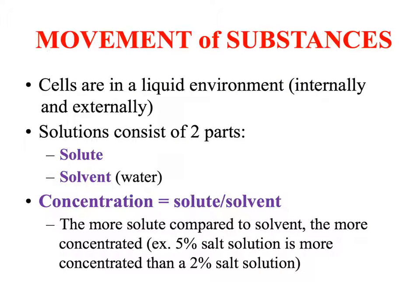A main goal of this lecture is understanding why and how things move into and out of the cell membrane. Things move based on how much water is present on either side, and also how much solute is present. We need to differentiate between solvents, solutes, and solutions. Water moves toward areas with more solute, because more solute means less water is present. Concentration equals solute divided by solvent.